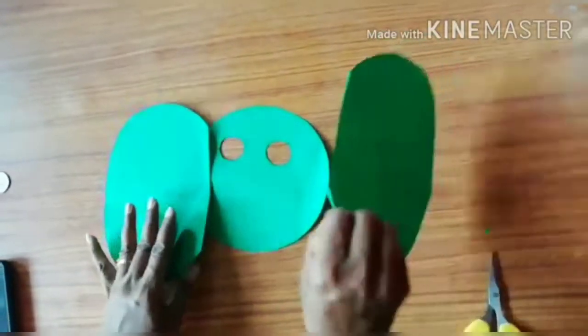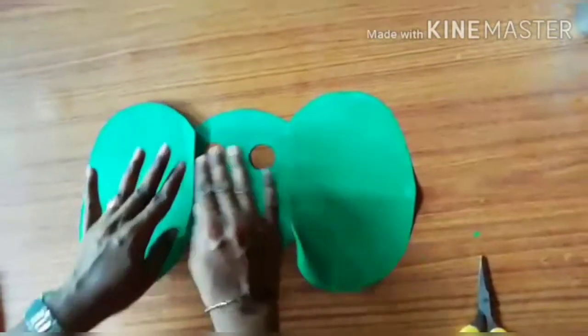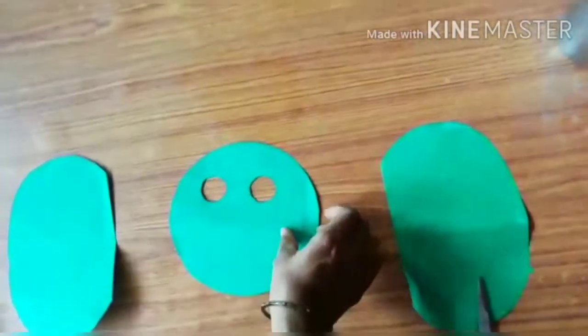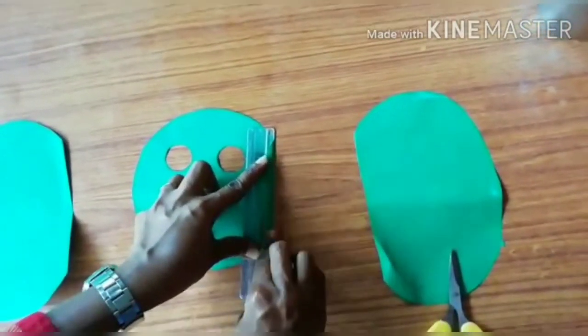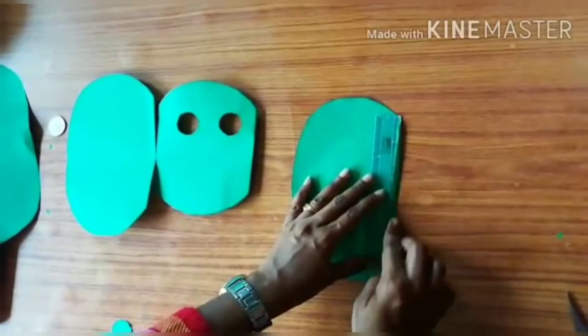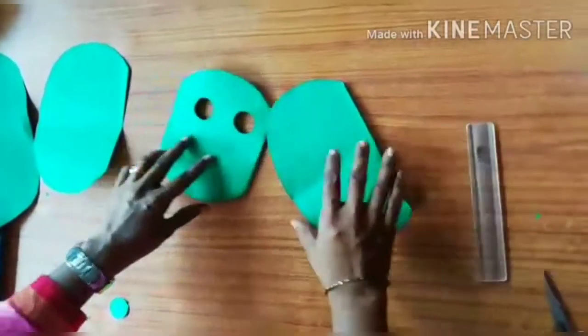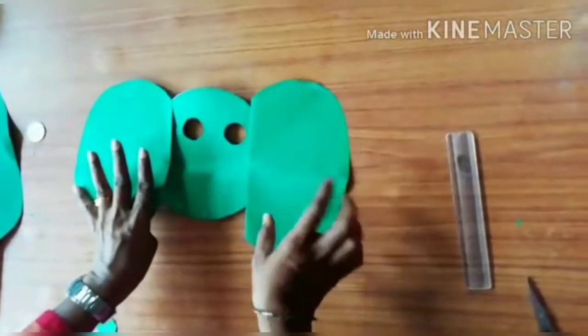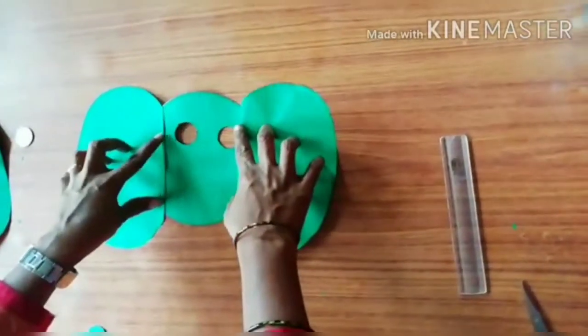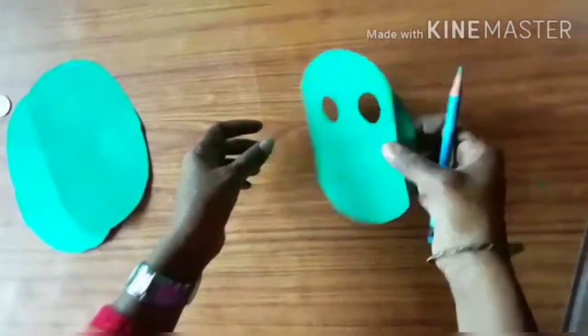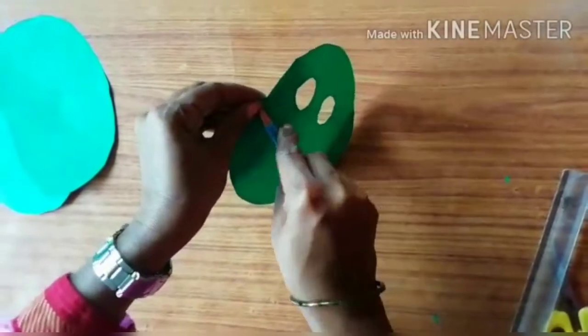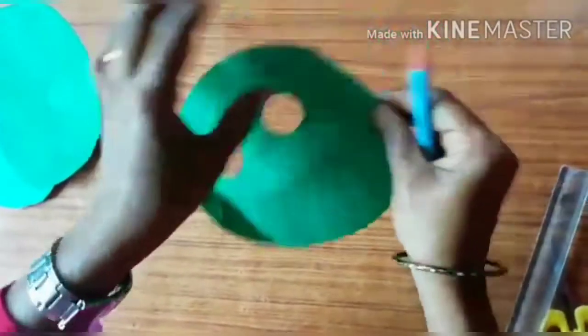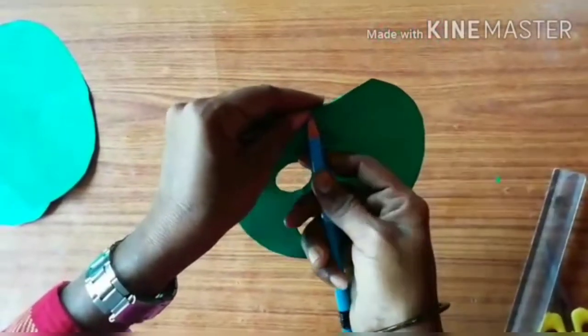And now we will be sticking the ears with the face. To stick the face and the ears, we'll be first folding the paper something like this. And then we are going to fold the ears as well. And then I am going to make a hole at the side of the face so that we can tie our mask on the face.